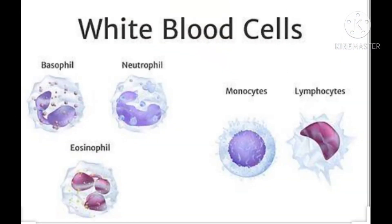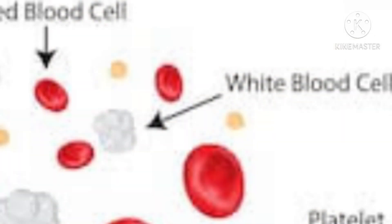Next, we will learn about white blood cells or WBCs. White blood cells are larger than red blood cells but fewer in number. They are colorless and without a specific shape. They fight germs that enter our body and protect us from diseases.